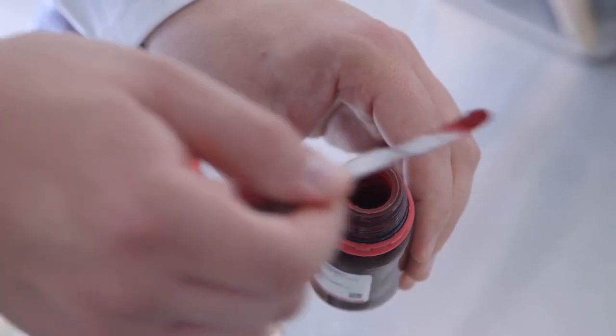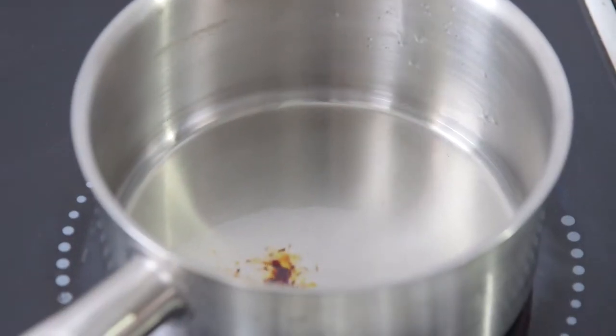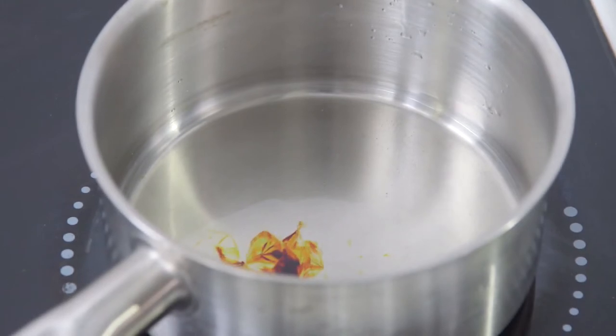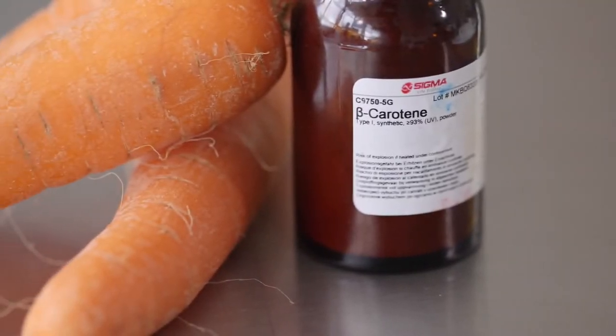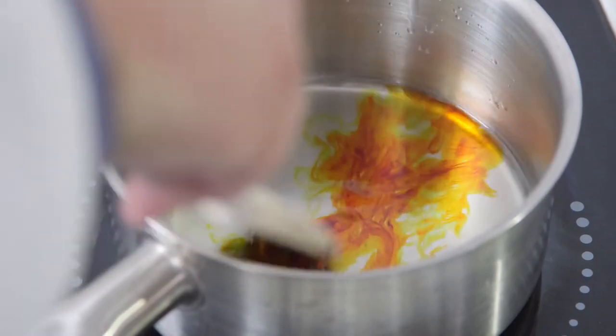Beta-carotene is a terpene, a highly unsaturated compound that behaves similarly to fats. Beta-carotene is orange. It gives carrots their color, and when it's oxidized, it goes colorless.